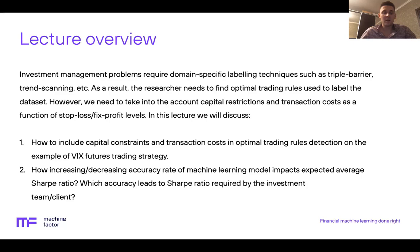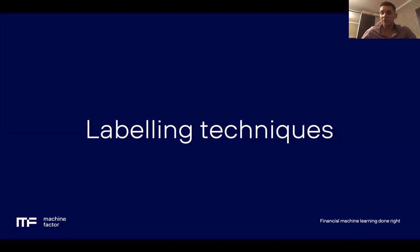In this lecture, we will discuss how to include capital constraints and transaction costs in optimal training rule detection on the example of a VIX futures trading strategy. We will also discuss how increasing or decreasing the accuracy rate of your machine learning model impacts the expected average Sharpe ratio, and which accuracy rate leads to the Sharpe ratio required by the investment team or external client. Before digging into optimal training rules detection, let's briefly discuss labeling techniques used to label the dataset.